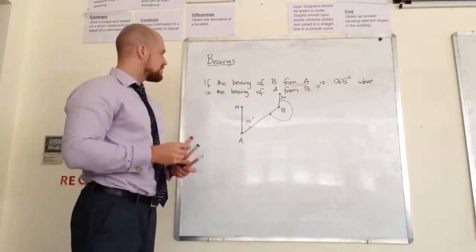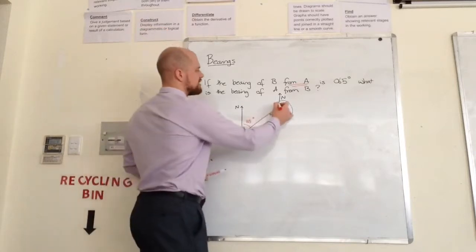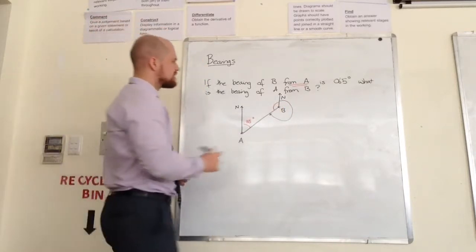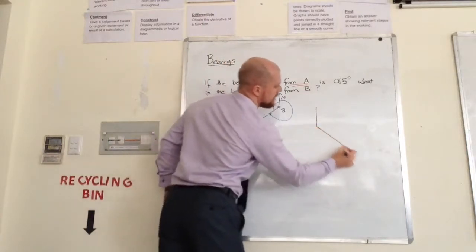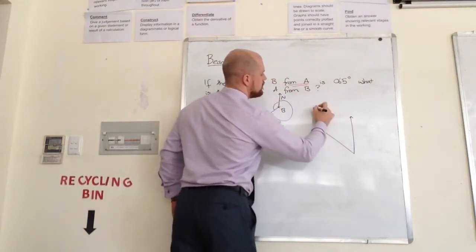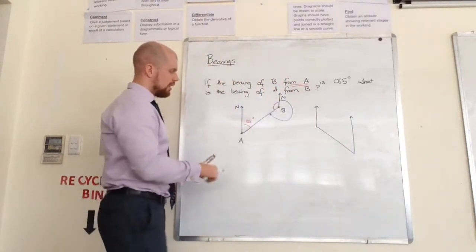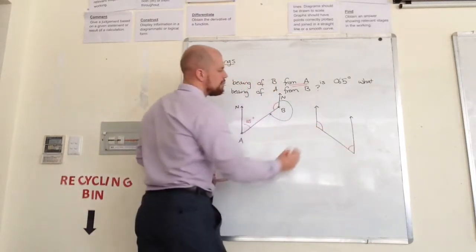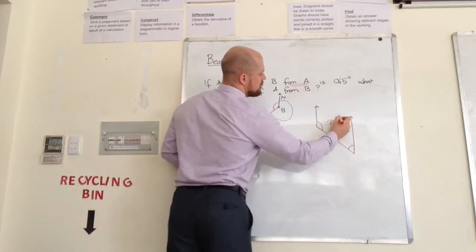So easiest thing to do is to find this angle. Now I can find this angle because I know that angles like this are alternate angles. This angle plus this angle must sum to 180 degrees.